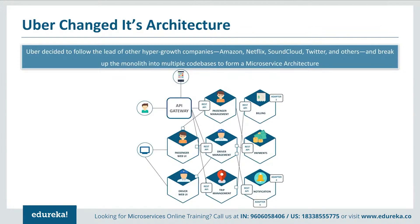This microservice architecture helped Uber scale its services individually. For example, the number of people searching for cabs is comparatively more than the number of people actually booking a cab and making payments. So, the number of processes working on the passenger management microservice are more than those working on payments. It was also observed that even if any one feature goes down, no other microservice gets affected — so developers need not rebuild their applications again and again even if one microservice goes down.